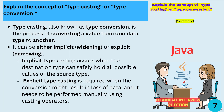Explain the concept of type casting or type conversion. Type casting, also known as type conversion, is the process of converting a value from one data type to another. It can be either implicit (widening) or explicit (narrowing). Implicit type casting occurs when the destination type can safely hold all possible values of the source type. Explicit type casting is required when the conversion might result in loss of data and needs to be performed manually using casting operators.